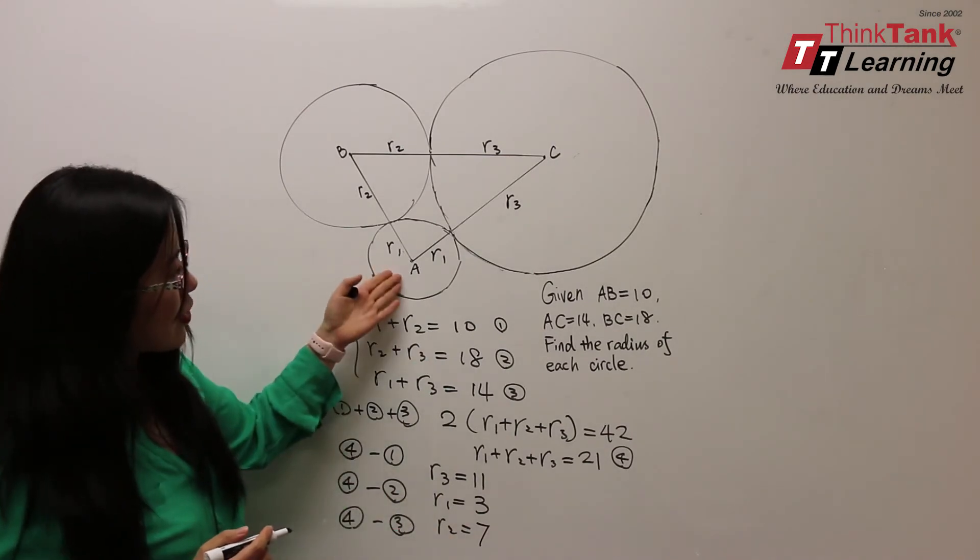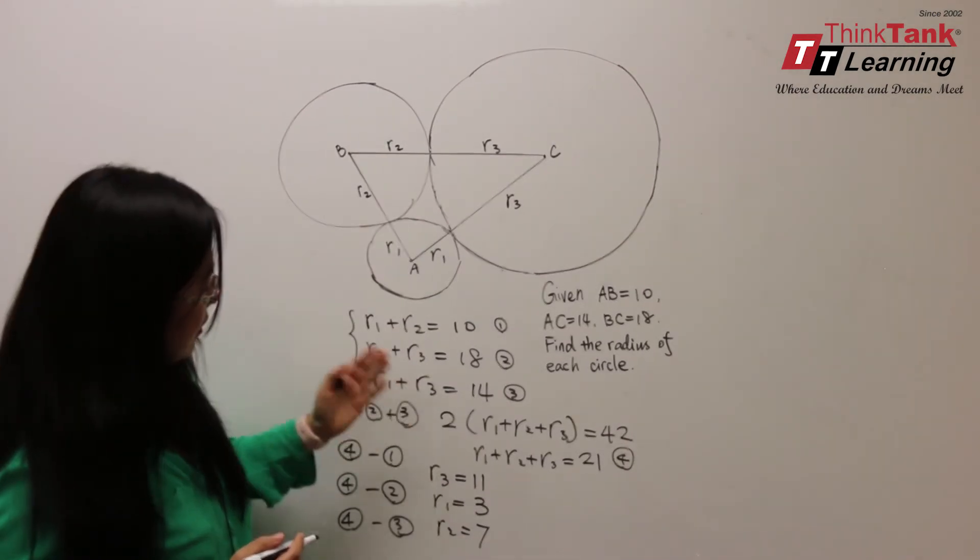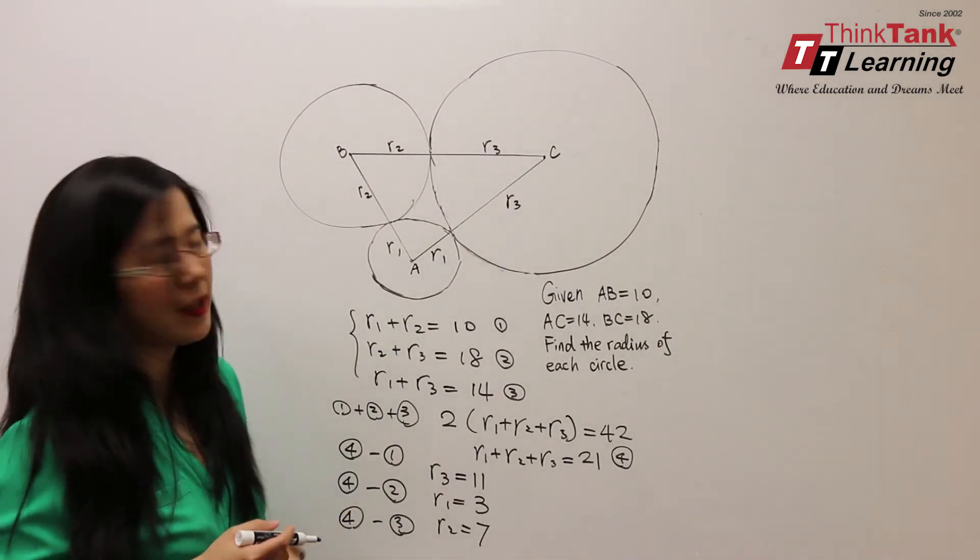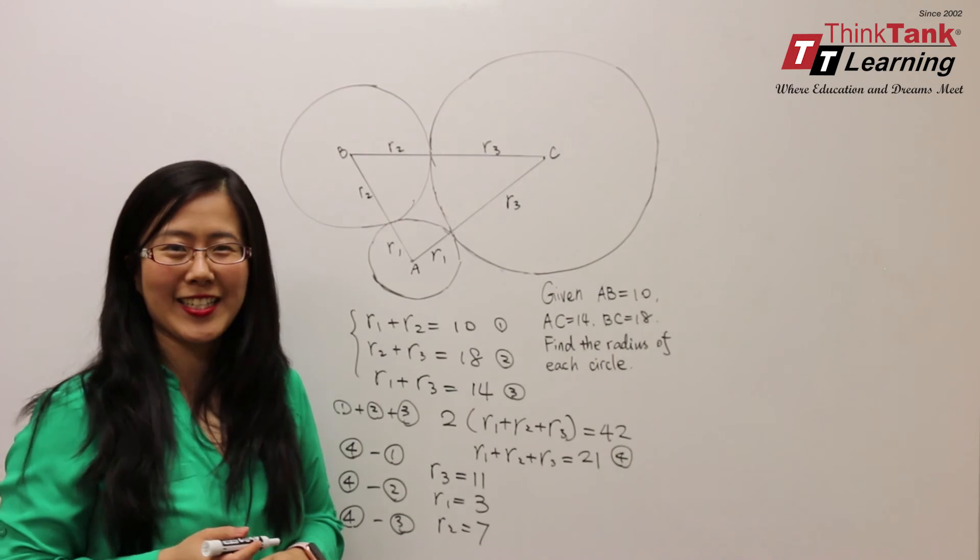The radius of circle A equals 3, the radius of circle B equals 7, and the radius of circle C equals 11. Did you get the answer?